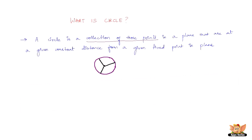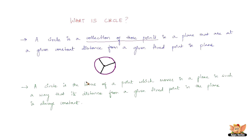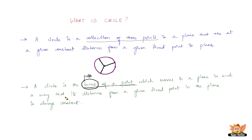Let us look at the geometric definition. A circle is the locus of a point. Now, for simplicity, simply replace the word 'locus' by the word 'path.' So a circle is the locus of a point which moves in a plane in such a way that its distance from a given fixed point in the plane is always constant.